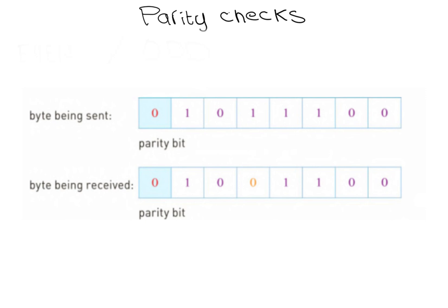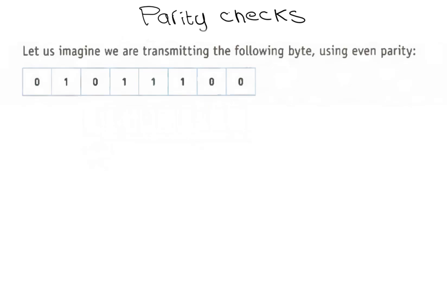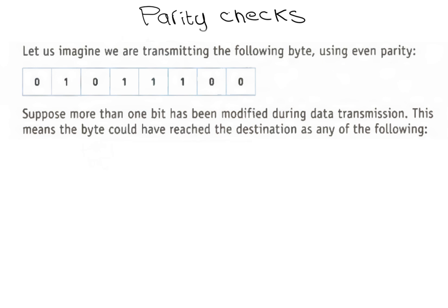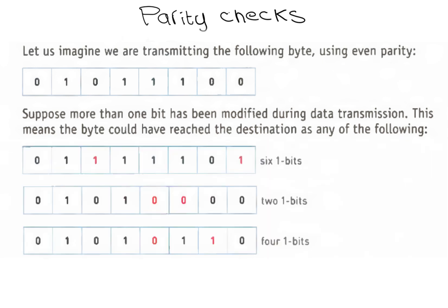The error is detected by the recipient's computer recalculating the parity of the byte sent. If even parity had been agreed between sender and receiver, then a change in parity in the received byte indicates that a transmission error has occurred. If two of the bits change value following data transmission, it may be impossible to locate the error using parity checking. Suppose more than one bit has been modified during data transmission — the byte could have reached the destination corrupted but still retaining even parity. Therefore, no error would be flagged in spite of the obvious errors in transmission. Clearly, it will be necessary to have other ways to complement parity to ensure errors are never missed. One such method is called checksum.